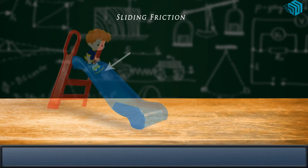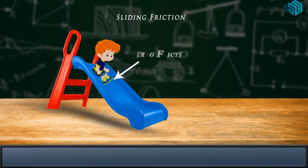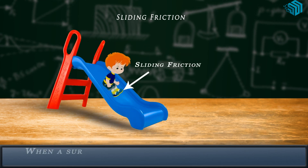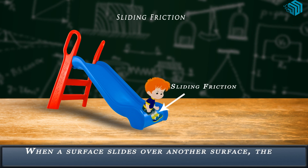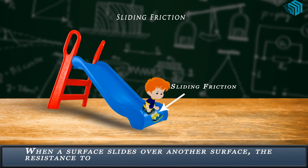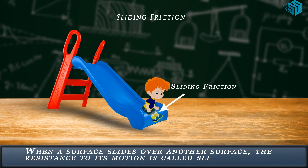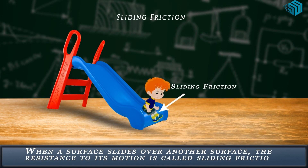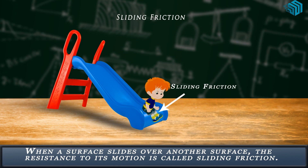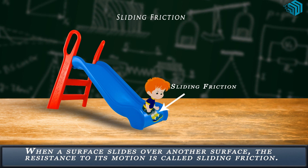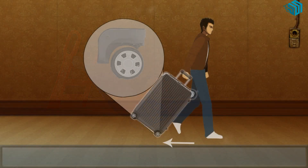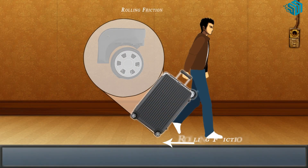Sliding friction. When a surface slides over another surface, the resistance to its motion is called sliding friction. For example, a boy sliding down a slide is an example of sliding friction.